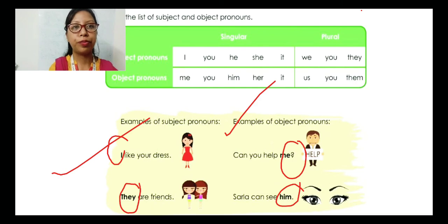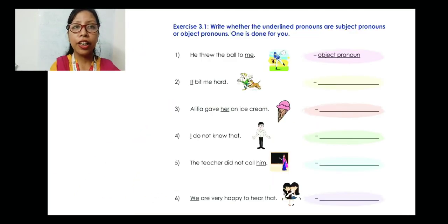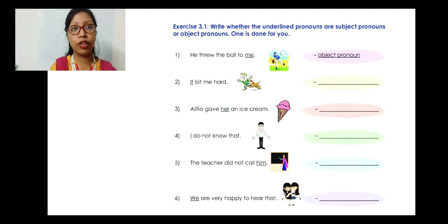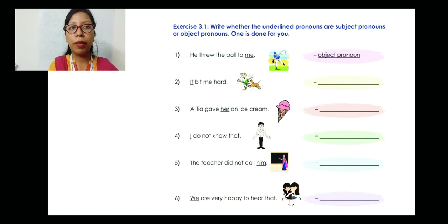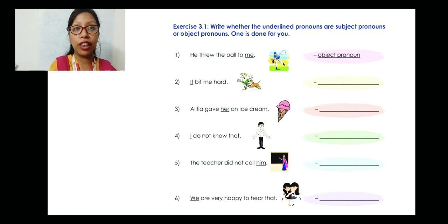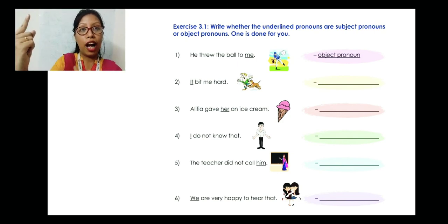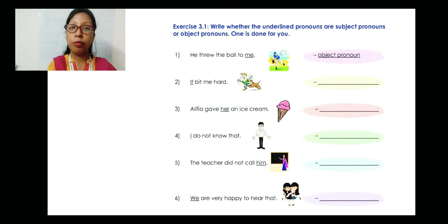Here we have Exercise 3.1: whether the underlined pronouns are subject pronouns or object pronouns. Number one is done for you: 'He threw the ball to me.' The word 'me' is underlined. Me is not a name — we are using it as a pronoun. He is doing the action and me is receiving it, because he threw the ball to me, so I have to receive the ball. Therefore, 'me' is the object pronoun here.